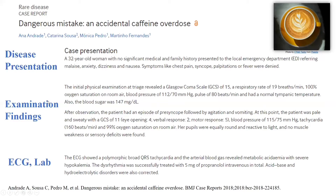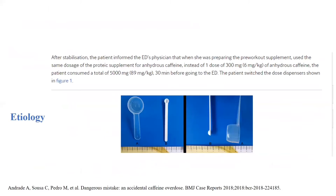For the physical exam, the authors described only the findings that specifically relate to their case. They might have done several blood tests — sugar levels and many other things — but they chose specific ones relevant to the case. After the exam findings in the ED, the authors mentioned the actual reason for this caffeine overdose. It turned out the patient mistakenly used the caffeine scoop instead of the protein supplement scoop, resulting in a very high dose of caffeine.